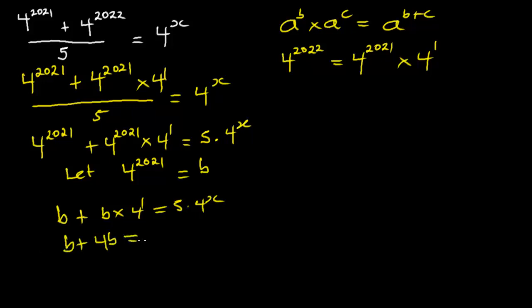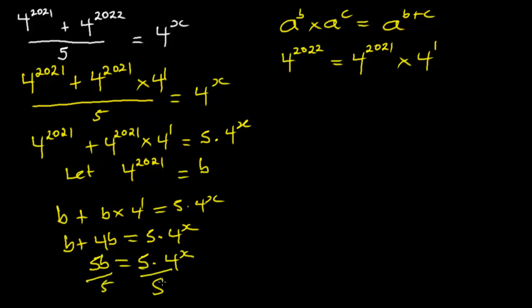This will be equal to five times four exponent X. From here we have B plus four B, which gives five B, equal to five times four exponent X. We can divide both sides by five, so B will be equal to four exponent X.